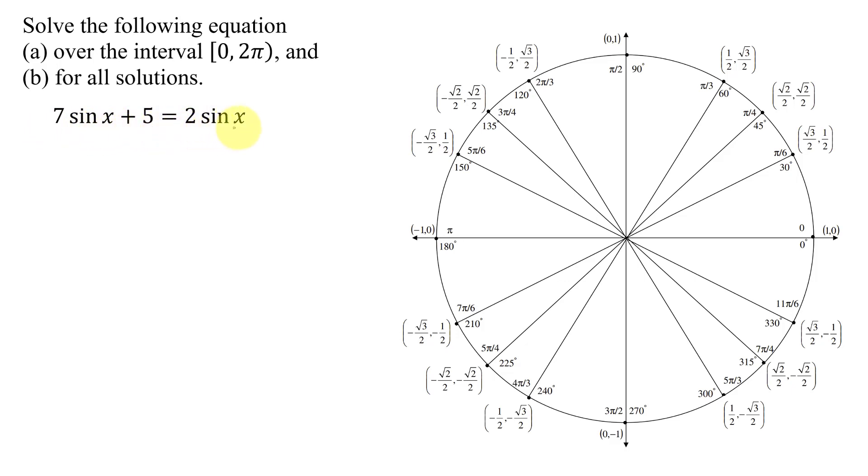What type of equation is this? It's a trigonometric equation, but it only contains one trig function, that's sine x. What's the highest exponent on any of the sine x's? It's a 1. So this is a linear trigonometric equation in sine x.